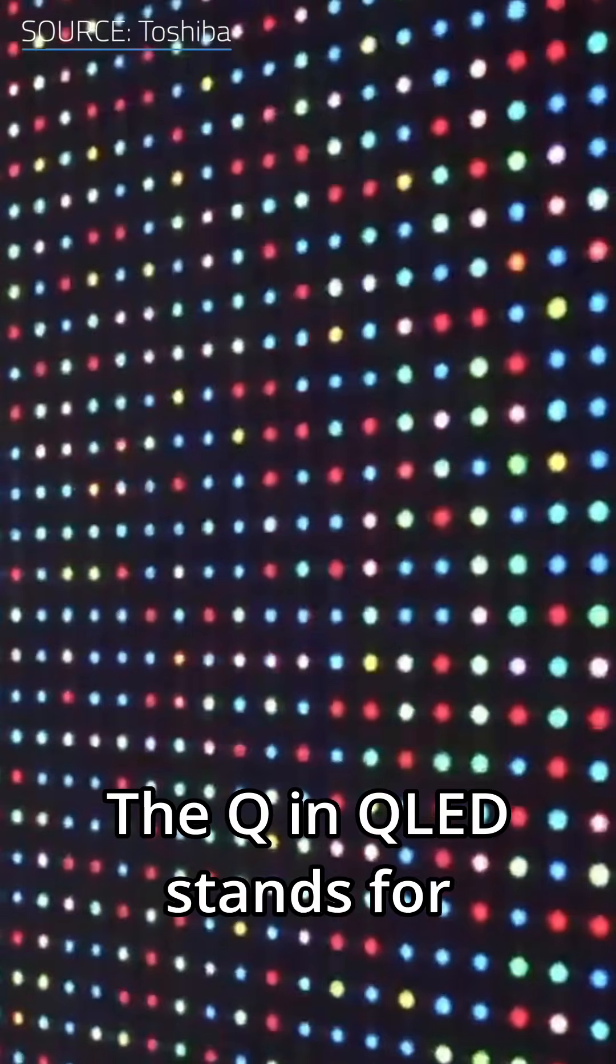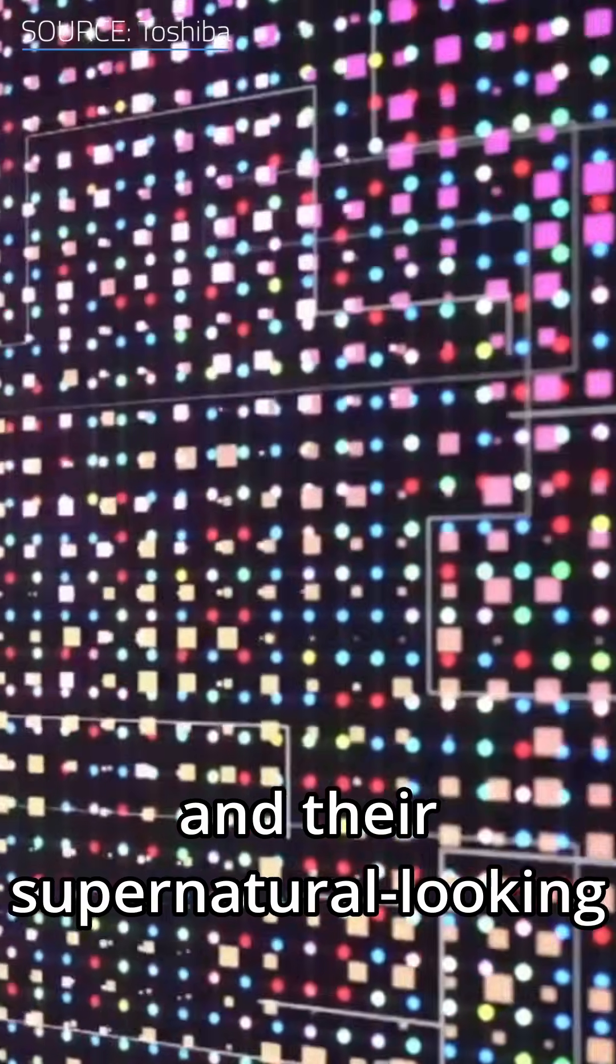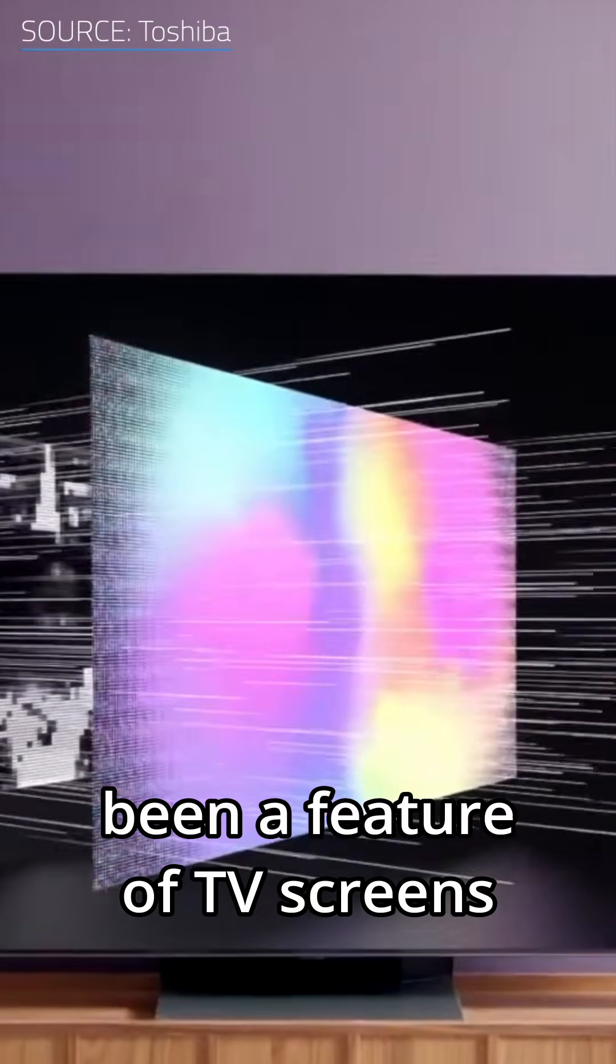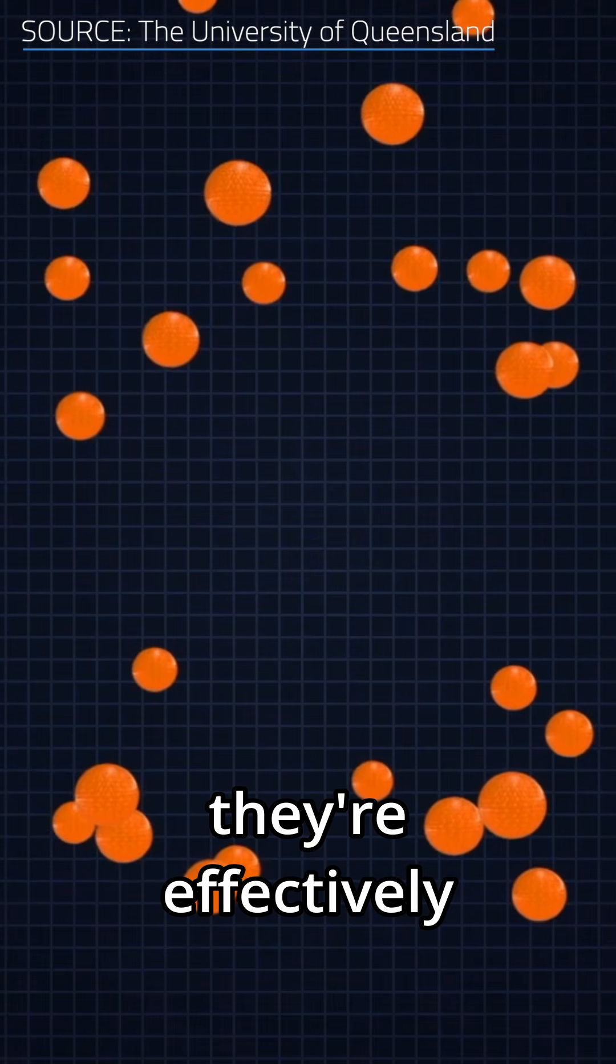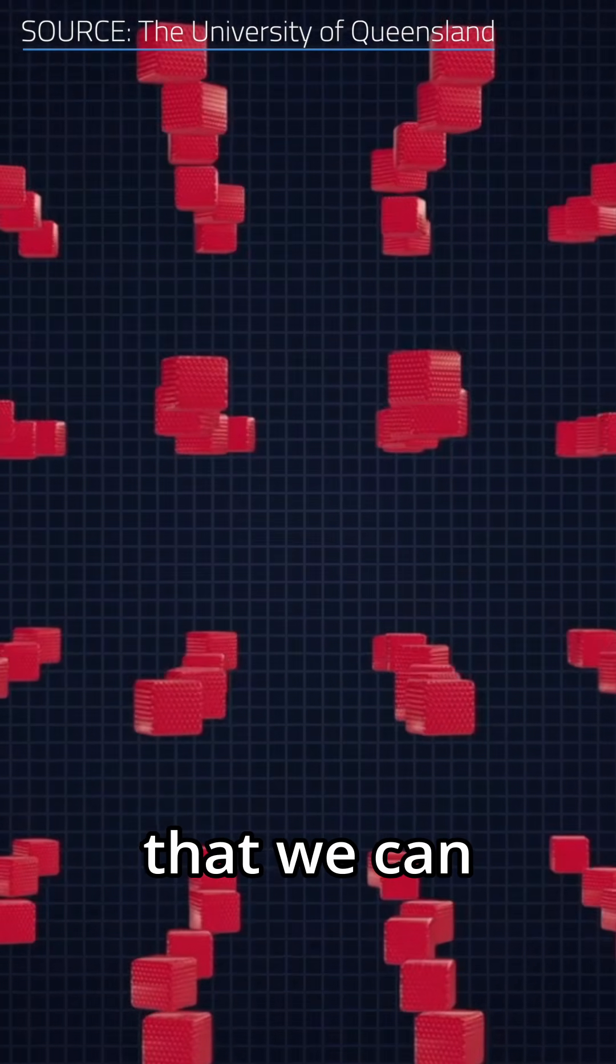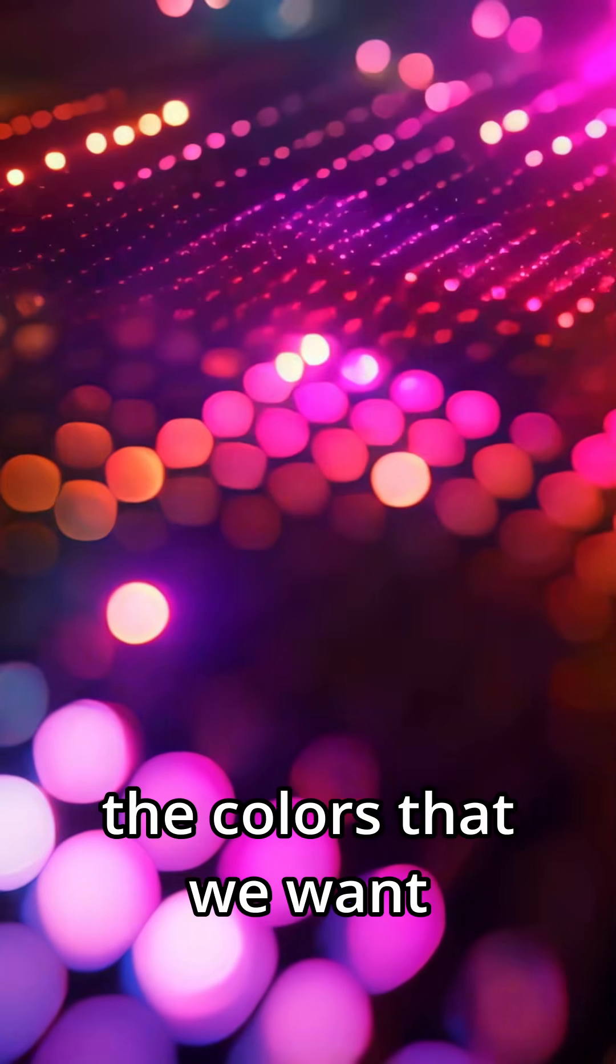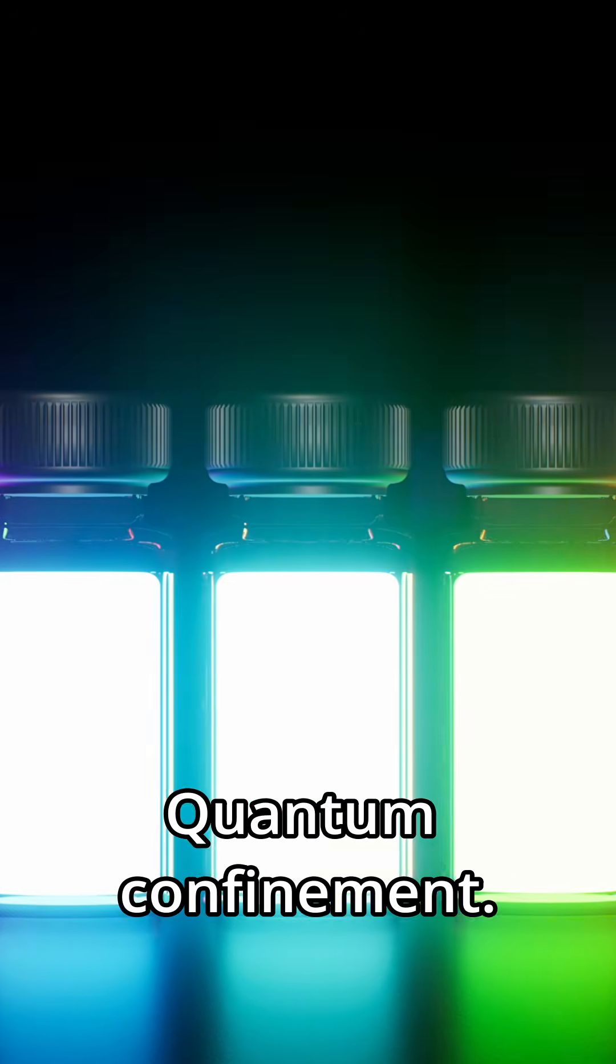The Q in QLED stands for Quantum Dot, and their supernatural-looking glow has already been a feature of TV screens and computer monitors for years. They're so small, they're effectively artificial atoms, that we can finely tune to produce the colors that we want, thanks to a phenomenon known as quantum confinement.